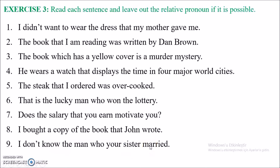Now we have exercise three in your handout. You need to read each sentence and leave out or omit the relative pronoun if it is possible. In this exercise, first find the relative pronoun, then look at the sentence. After the relative pronoun, do you have directly a verb, or do you have a subject? If you have directly a verb, it is a subject relative pronoun and there is no omission. If you have a subject after the relative pronoun, it is an object relative clause and you can omit the pronoun. Please pause the video and do exercise three.